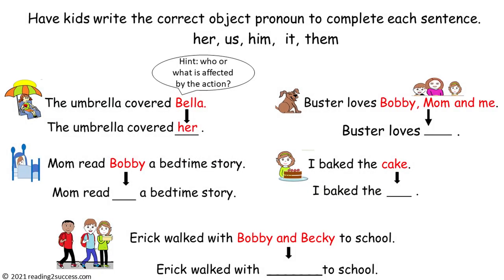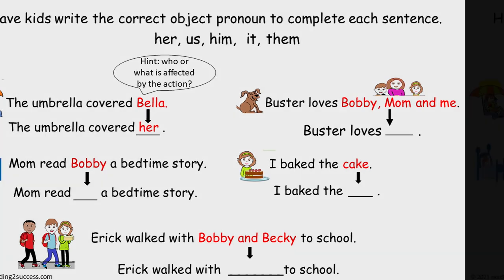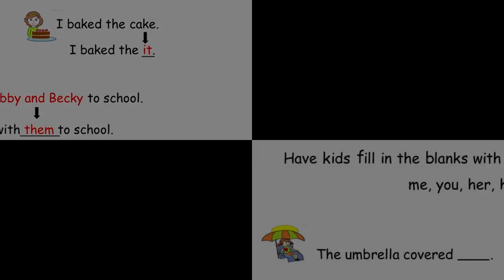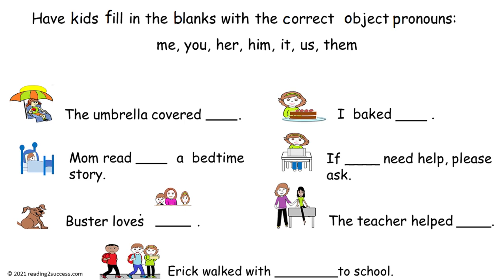Now follow the example shown to complete each sentence with kids. The pronoun 'her' replaced Bella. 'Him' replaces Bobby. 'Us' replaces Bobby, Mom, and me. 'It' replaces cake. And 'them' replaces Bobby and Becky. This is a second practice page — choices are me, you, her, him, it, us, and them.